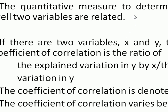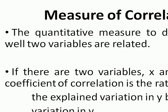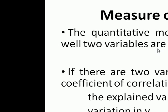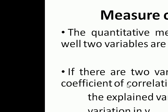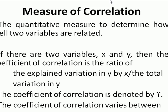Measure of correlation: how do we know whether a relationship between two variables is weak, good, or strong? The quantitative measure used to determine how well two variables are related is called the measure of correlation, or we call that value the coefficient of correlation. If there are two variables x and y, then the coefficient of correlation is the ratio of the explained variation in y by x divided by the total variation in y.